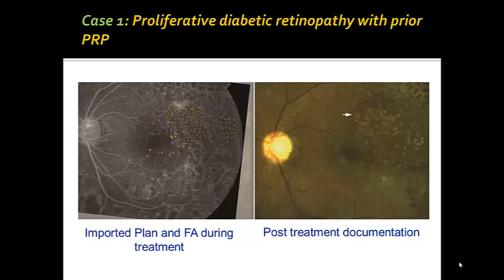The angiogram was imported into NAVALAS and superimposed on the retinal image of the left eye, and the treatment plan was created. The plan targeted both the neovascularization and the adjacent area of non-perfusion, avoiding the foveal avascular zone. Post-treatment documentation shows photocoagulation burns accurately corresponding to the pathologic areas. This patient remained stable at month 4.